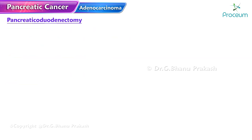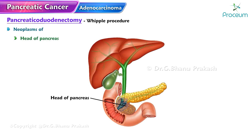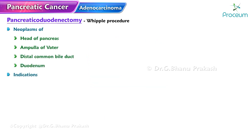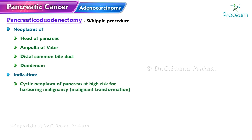Pancreaticoduodenectomy, commonly known as the Whipple procedure, is most commonly indicated for neoplasms of the head of the pancreas, ampulla of Vater, distal common bile duct, or duodenum. It may also be performed for cystic neoplasms of the pancreas at high risk for malignant transformation. Far less frequently, the procedure is carried out to manage intractable pain associated with chronic calcific pancreatitis.